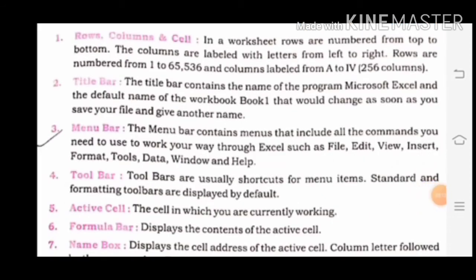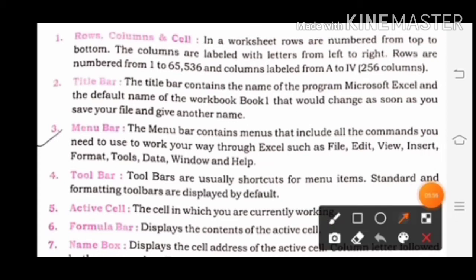Now we will get short information about components of Excel windows. First: Rows, Columns and Cells. In a worksheet, rows are numbered from top to bottom and columns are labeled with letters from left to right. Rows are numbered from 1 to 65,536 and columns are labeled from A, with 256 columns total. यहाँ पर याद रखना है कि rows हैं 65,536 और columns हैं 256.